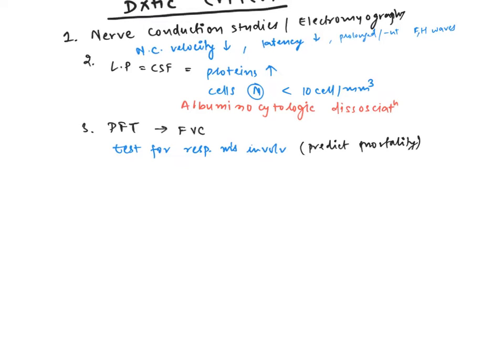Why do we call it albuminocytologic dissociation? Since this disease is polyradicular neuropathy, where the radical is involved, proteins leak but cells do not leak. In CSF there will be increased proteins, and this is albuminocytologic dissociation. Very important concept.